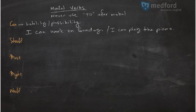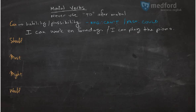If it's the negative form, you're going to use 'I cannot' or 'I can't.' If it's the past, you're going to use 'could' — the rest is the same. So you can say 'I could work on Sunday' or 'I could play the piano.'